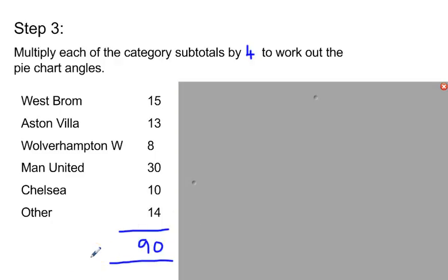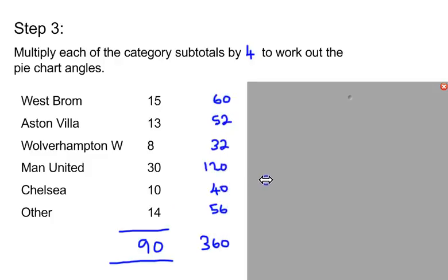Okay, have you come up with these answers? 60, 52, 32, 120, 40, and 56. These numbers are the numbers of degrees each sector of the pie chart is going to take up.